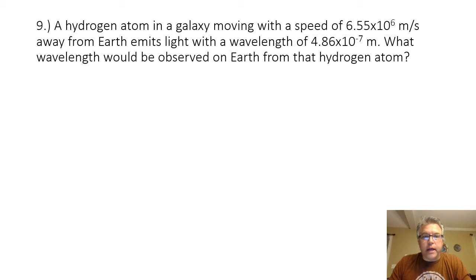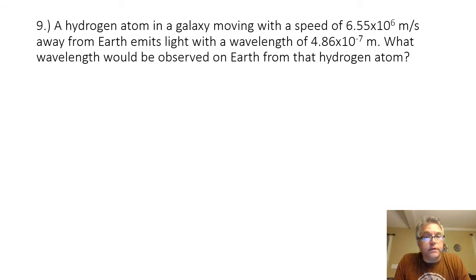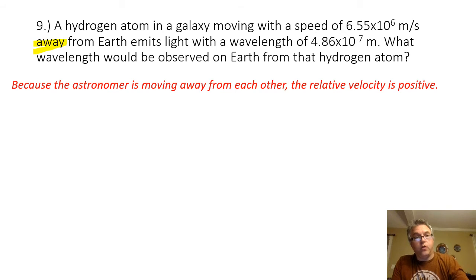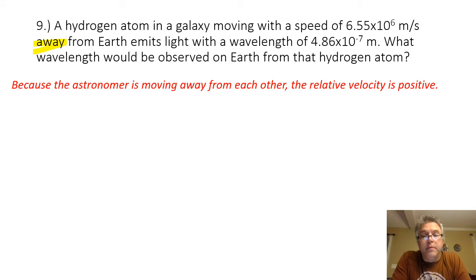Problem nine: a hydrogen atom in a galaxy moving with a speed of 6.55 times 10 to the sixth meters per second away from earth emits light with a wavelength of 4.86 times 10 to the minus seventh meters. What wavelength would be observed on earth? We are dealing with wavelengths here. Because the galaxy is moving away, and we are using the wavelength form of the Doppler equation, the sign convention is reversed — away is positive and toward is negative.